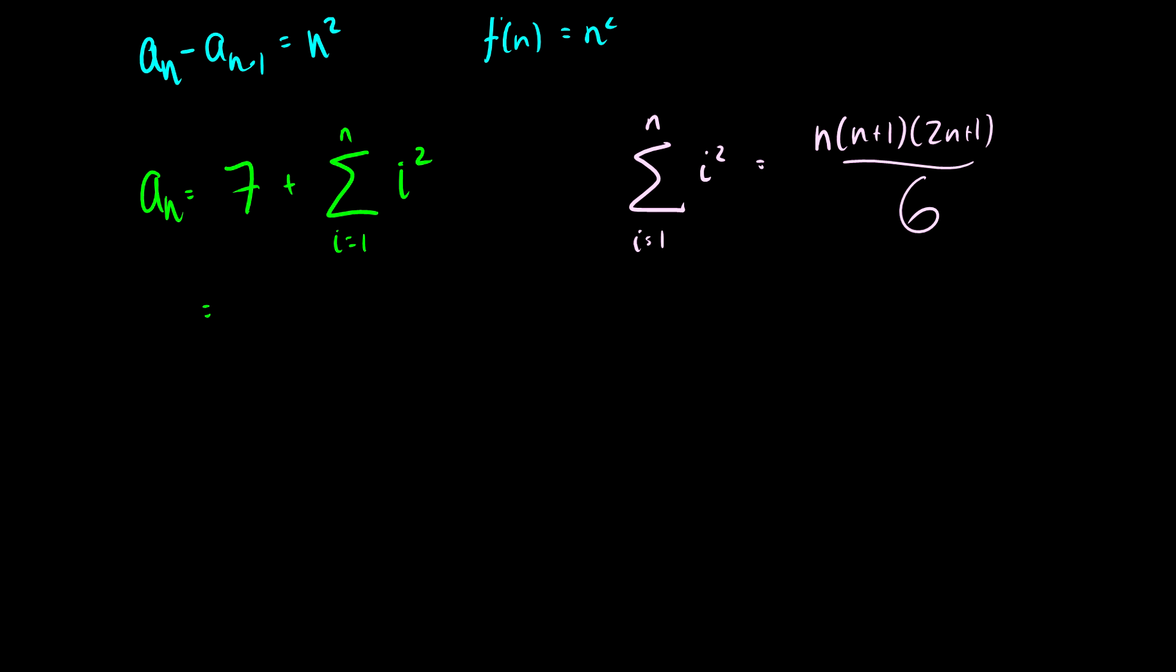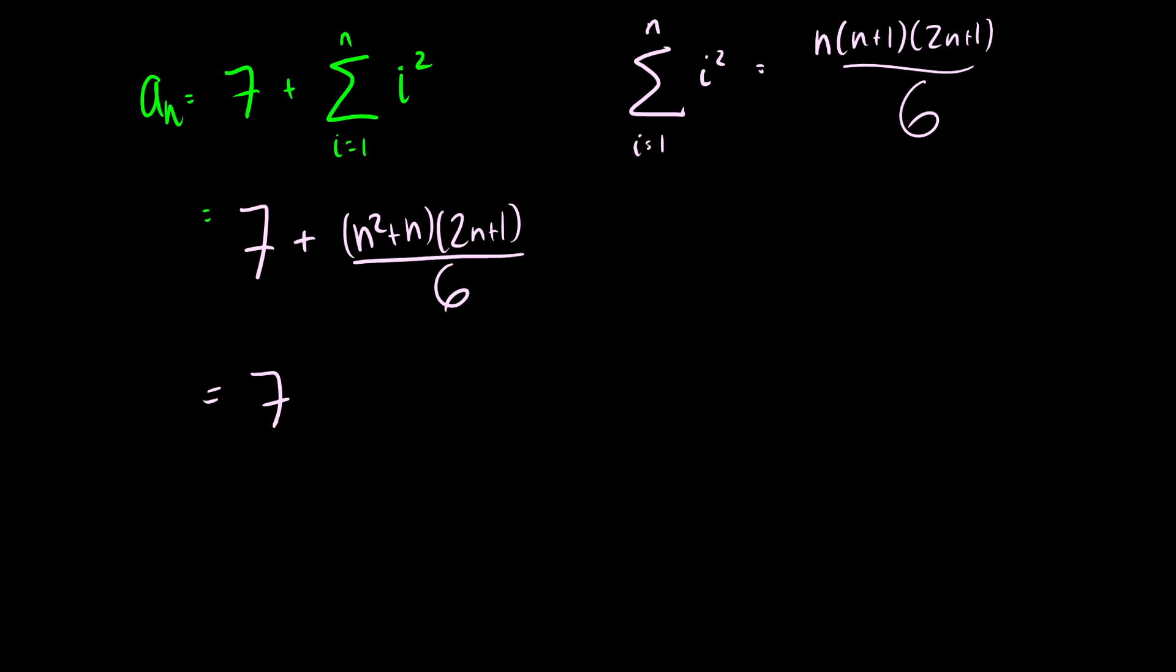Okay, so this is just going to be 7 plus, well we already know our sum here. This is going to be n times n plus 1 times 2n plus 1 all over 6. You could technically be done here but for the sake of completion let's multiply these out. This will be n squared plus n and then we'll do some foiling or some distributing. So this will be 2n cubed plus 2n squared plus n squared so this will become 3n squared plus n all over 6.